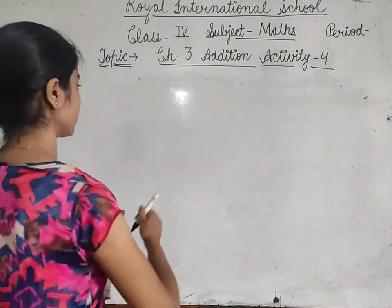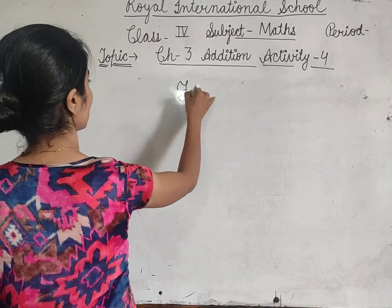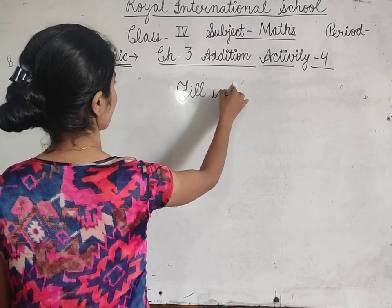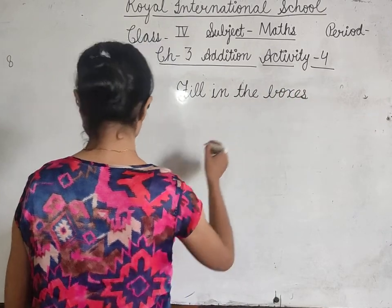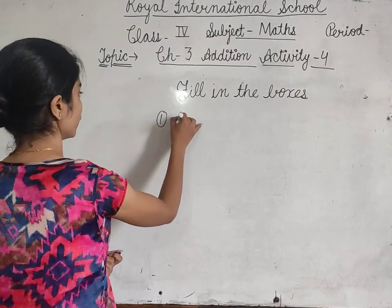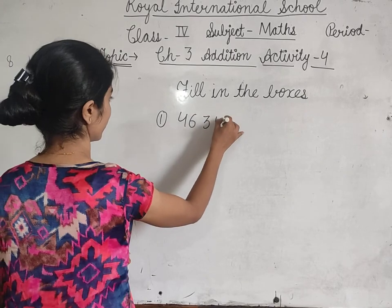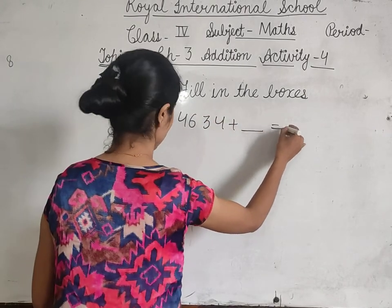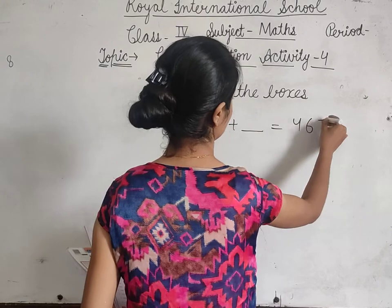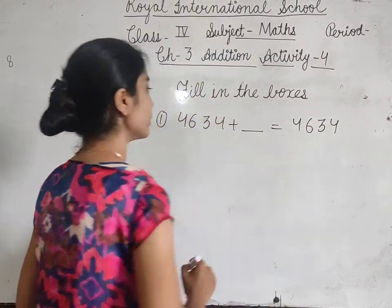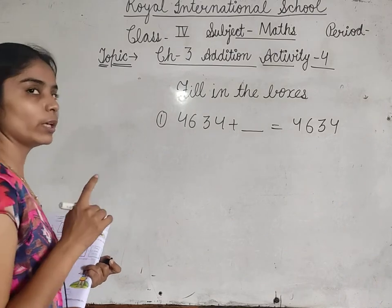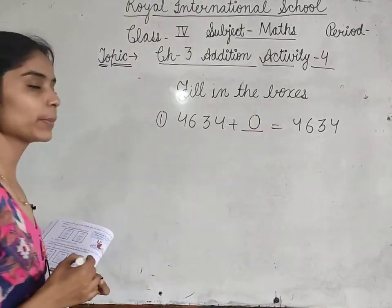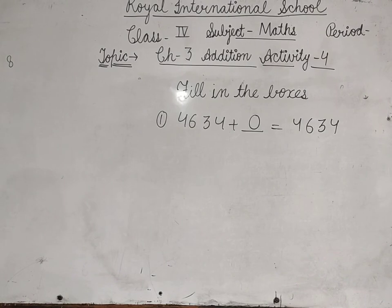Activity number 4, fill in the boxes — book में ही करना है। First: 4634 plus dash equals 4634. तो देखो, same number की बात है — when 0 is added to a number, answer same number आता है। तो answer आएगा 0।